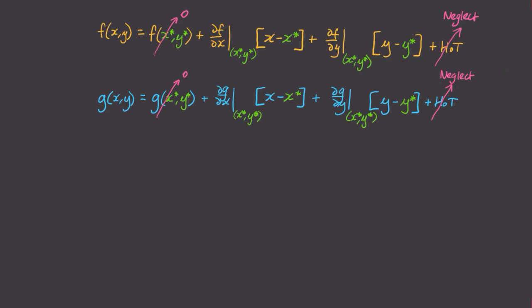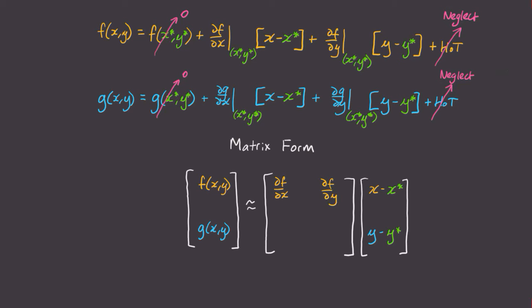And so now we've got a simplified equation of motion, which we can write in matrix form. We can say that f of xy and g of xy are approximately equal to some matrix times the vector x minus x star, y minus y star. And from the Taylor series above, we can tell that the matrix must contain all of the partial derivatives evaluated at the fixed point.